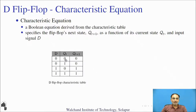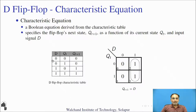When D is 0 and Q(T) is 0, Q(T+1) is 0. When D is 0 and present state is 1, next state will be 0. When D is 1 and present state is 1, next state will remain 1. Using this characteristic table with a K-map, we derive the characteristic equation for the D flip-flop: Q(T+1) = D.